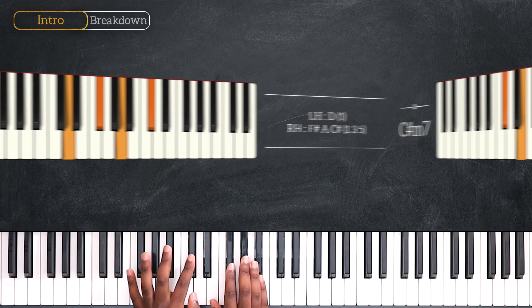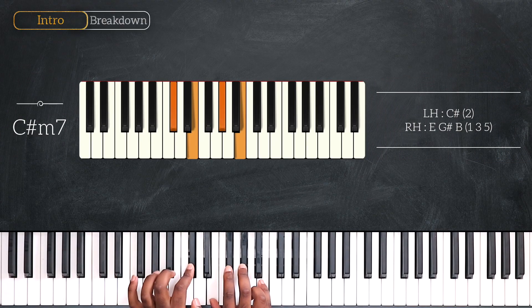Then we're going down on C sharp minor 7. C sharp, E, G sharp and B.